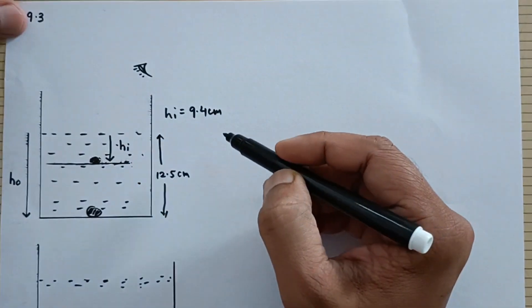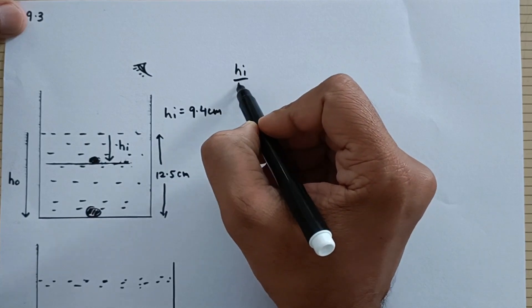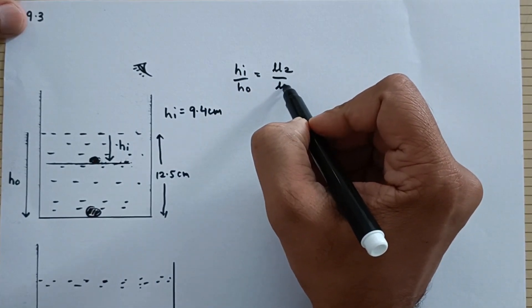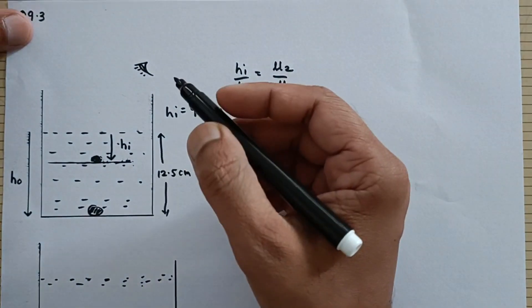So if you are viewing through the microscope this appears to be somewhere over here. The apparent depth is 9.4. Now we know this formula that HI upon HO that is equal to refractive index of medium 2 upon refractive index of medium 1.